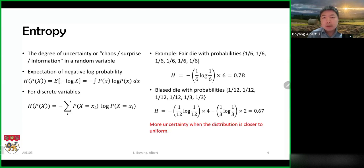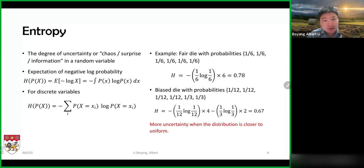We'll first look at entropy. Intuitively, entropy is a notion of uncertainty, or it can also be understood as the amount of chaos in a system. If the entropy is high, then we have a lot of chaos, a high level of uncertainty, and there is very little that we can predict — no structure that we can see.